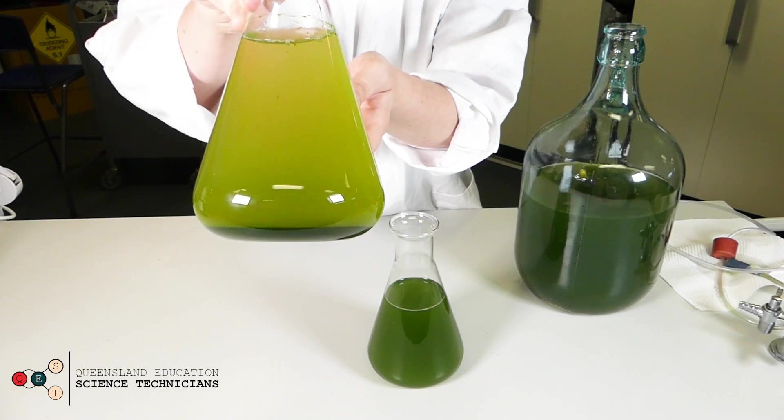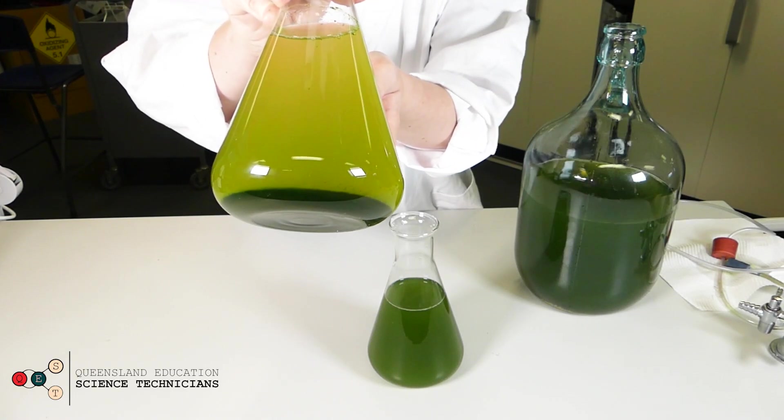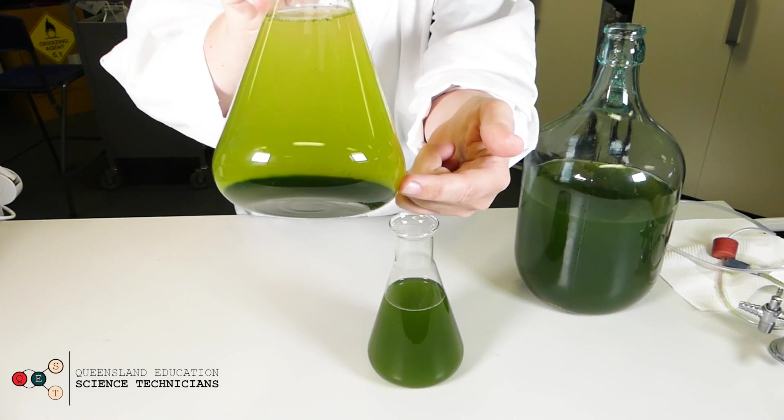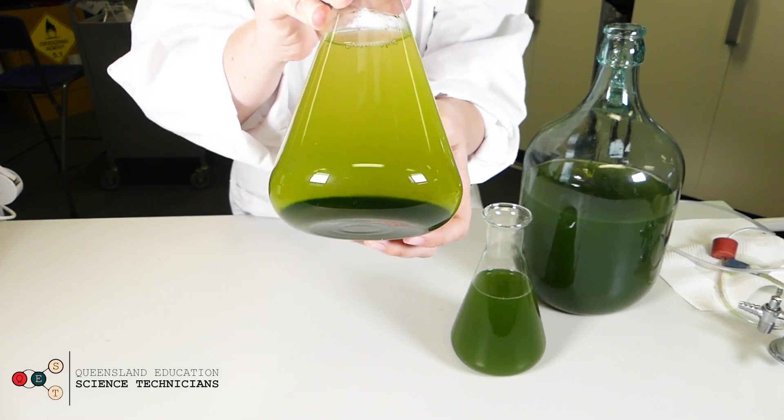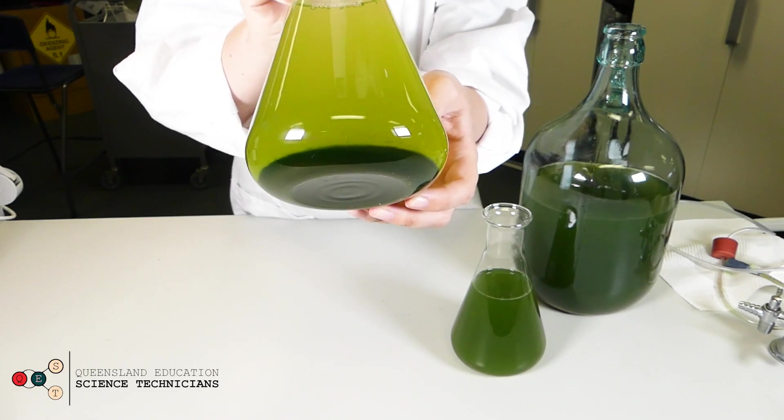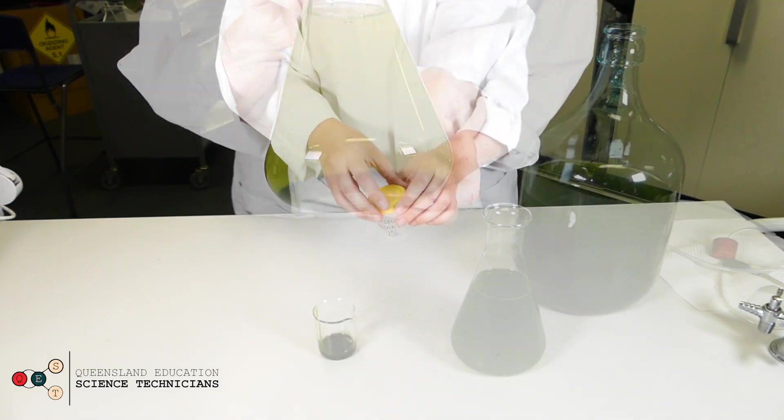This is one that I prepared earlier and you can see that at the bottom of the flask there is now a layer of thick algae that settled out of the solution. This is what we're going to use to make our algal balls.